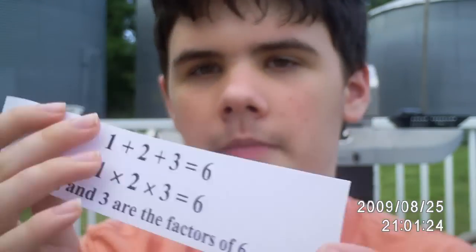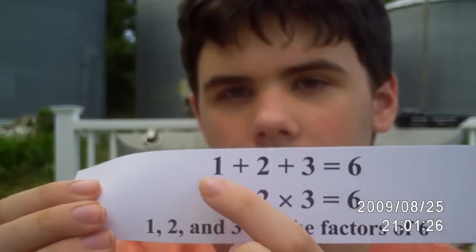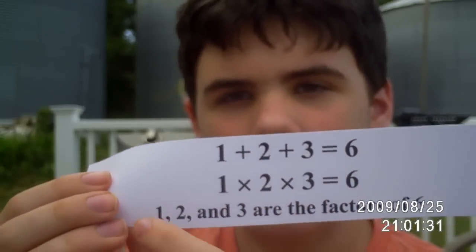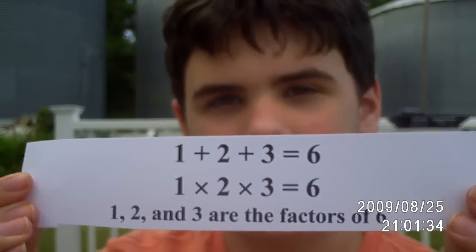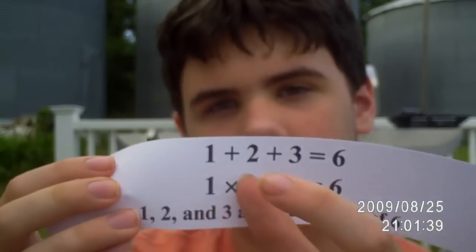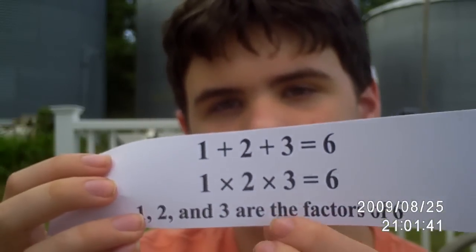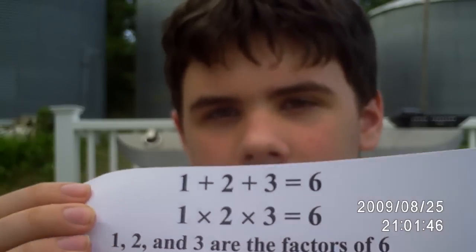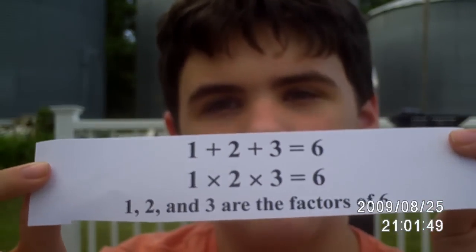One more thing: 1 plus 2 plus 3 equals 6, and 1 times 2 times 3 equals 6. Also, 1, 2, and 3 are the factors of 6. It's the only number with all 3 of these properties. If you want numbers with 2 out of 3 — specifically the addition and the factors — that would be called a perfect number. 6 is the smallest perfect number. And that is why 6 is a great number — not quite what you'd normally call a constant, but great nonetheless.